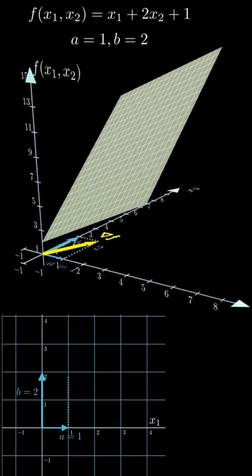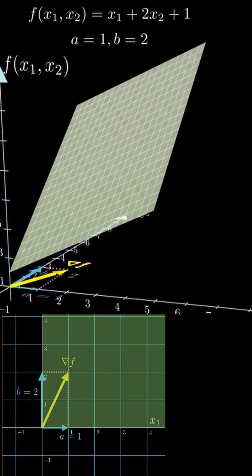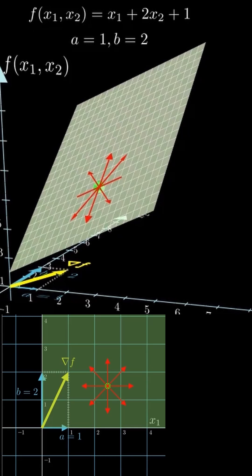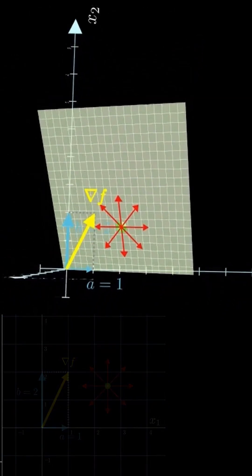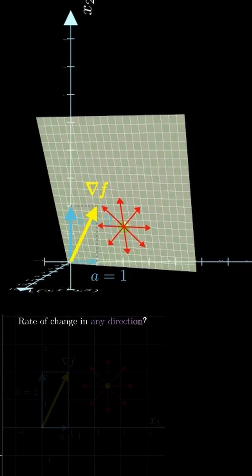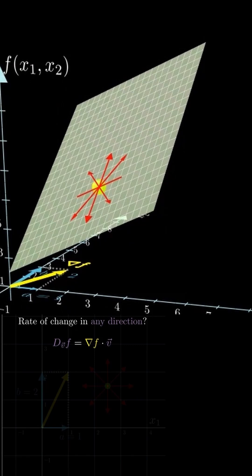Now, let's look at the gradient from the viewpoint of a directional derivative. This time, instead of moving only along a contour line, imagine moving in any direction in the plane. Naturally, the change in f depends on which direction you choose. So the question is, how can we measure the rate of change of f in a given direction? That's exactly why people came up with the formula for the directional derivative. The directional derivative tells us how fast the function changes at a given point when we move in some direction vector v, like this purple arrow here.